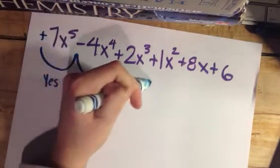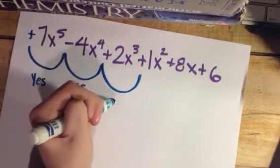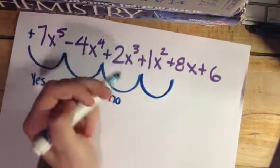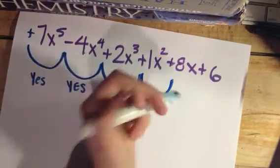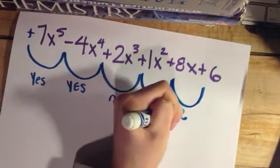Then it's a positive 2x to the third to a positive 1x squared, so we write no. Then 1x squared to 8x, no. And then 8x to 6, so no.